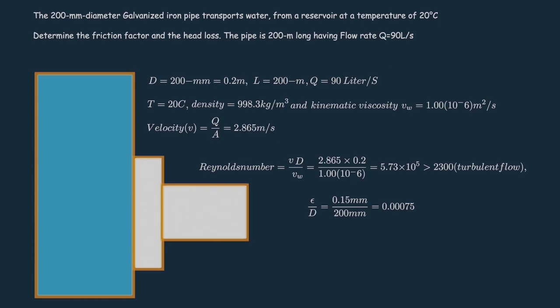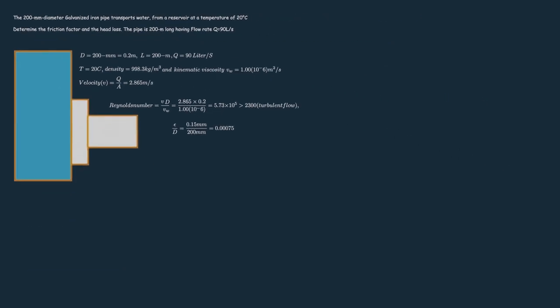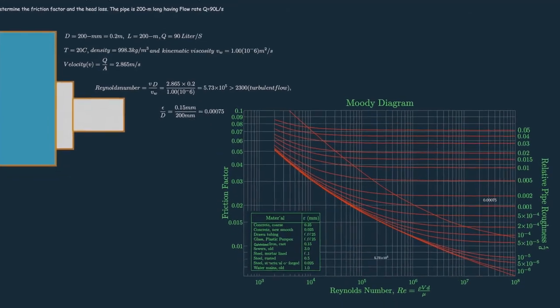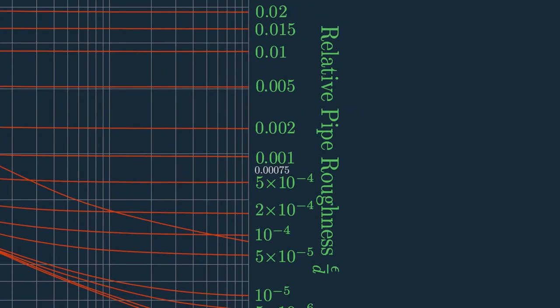Look, we have both numbers, that is, relative pipe roughness and Reynolds number. It seems our relative pipe roughness lies between these two values.